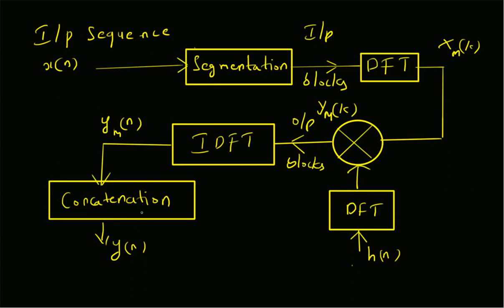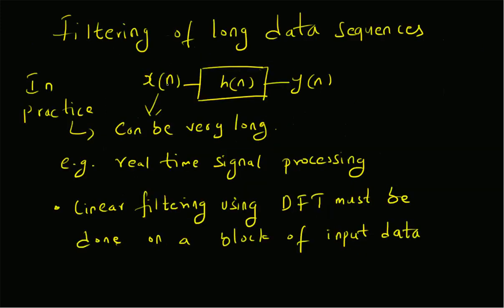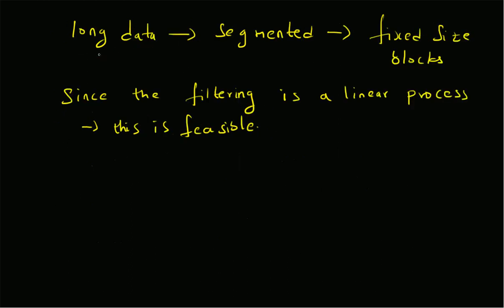In this video we have looked at the filtering of long data sequences. Given input x(n) and a linear filter with impulse response h(n), we find the output y(n). The key issue is that x(n) can be very long, meaning we do not have access to all of x(n) at any given time — only chunks are available, as in real-time signal processing. The DFT-based filtering method is applied on available blocks of input data.